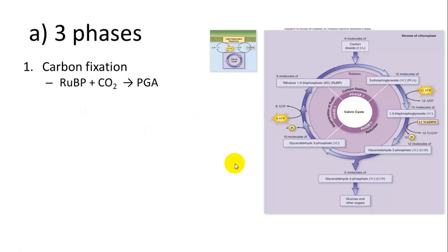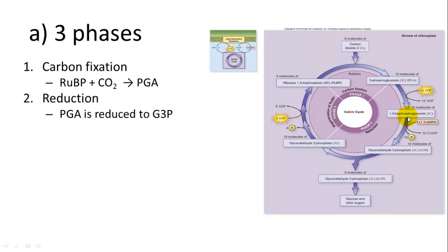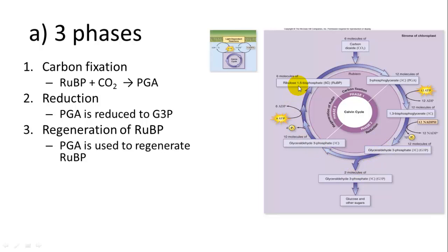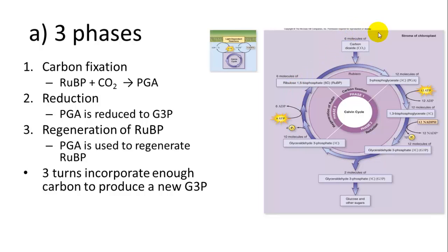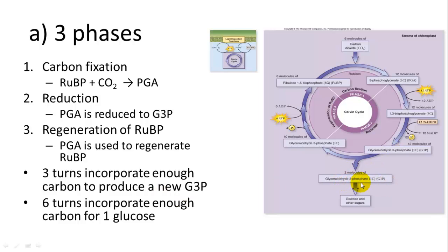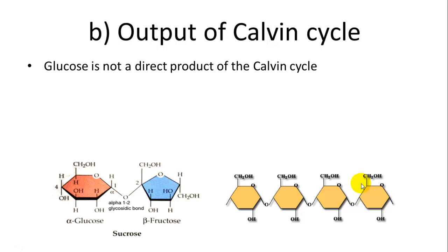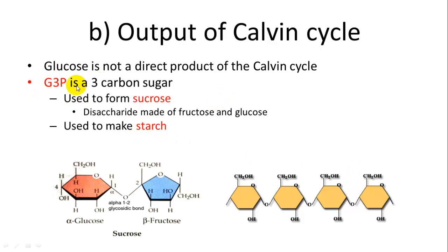The key step of the Calvin cycle is the attachment of CO2 to ribulose-1,5-bisphosphate (RuBP) to form 3-phosphoglycerate (PGA), using the enzyme RuBisCO. PGA is then reduced to glyceraldehyde-3-phosphate (G3P), which is regenerated back to RuBP. Three turns fix enough CO2 for one G3P; six turns make one glucose or fructose; twelve turns produce one sucrose. Glucose is not a direct output — G3P is used to form sucrose and starch.